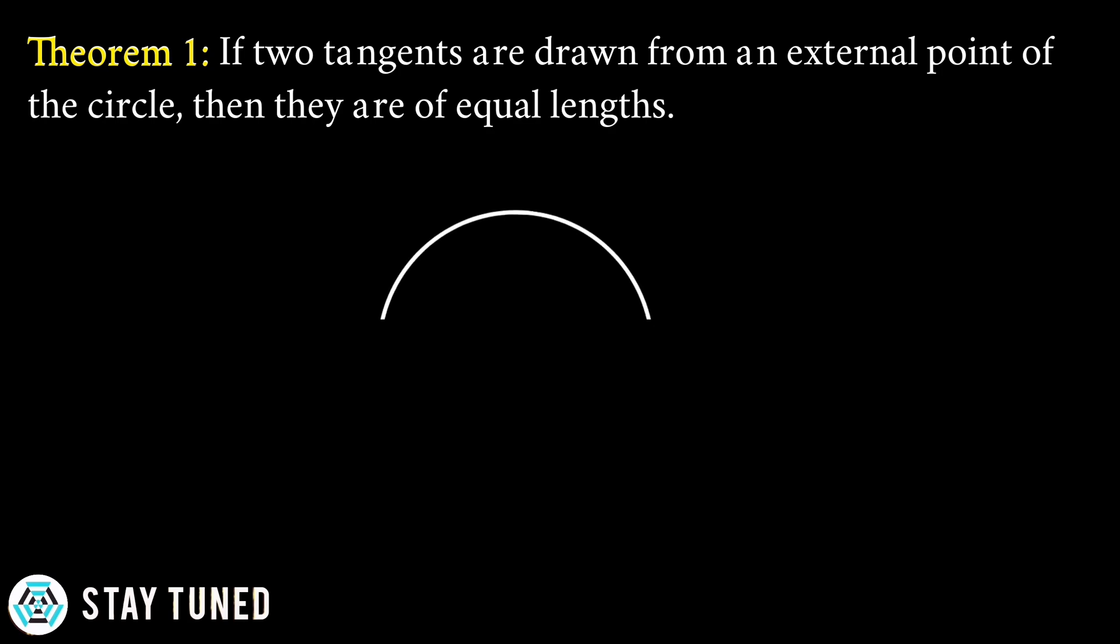So consider a circle, and we will take exterior point A. We will draw a tangent to the circle at point M, and we will draw another tangent to the circle at point N. Therefore, AM is equal to AN from the above statement.